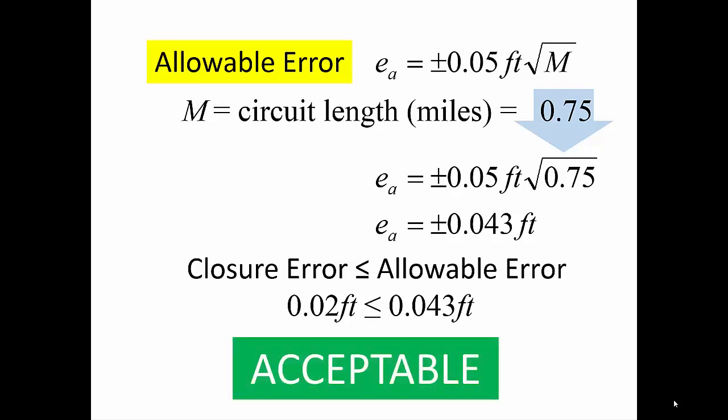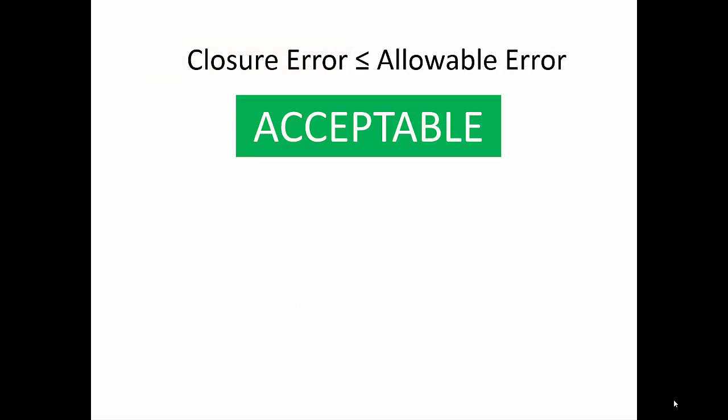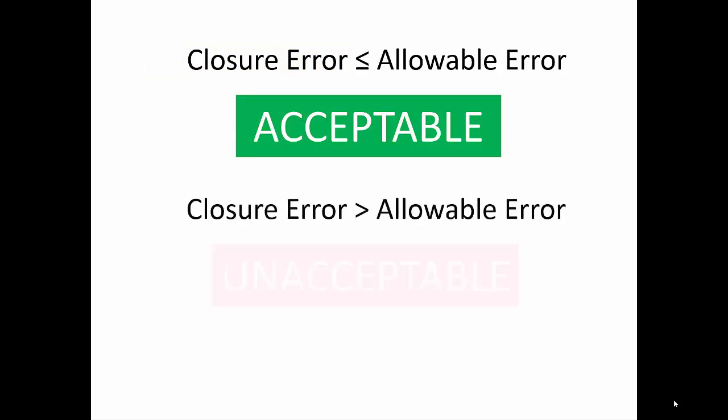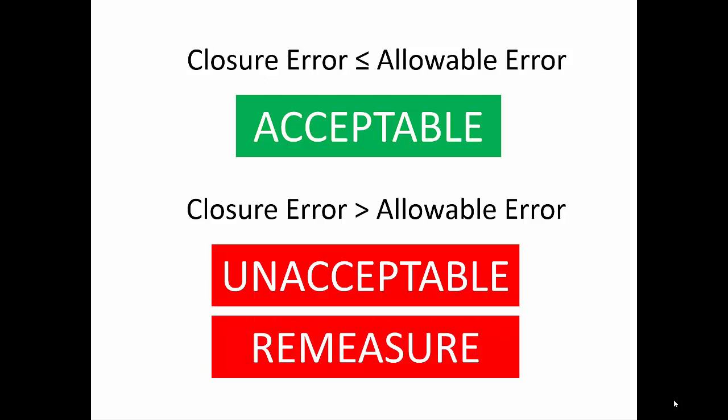However, if the closure error were to exceed the allowable error, the closure error would be unacceptable. The remedy then is to re-measure the circuit in part or in whole until the error source is discovered and corrected.